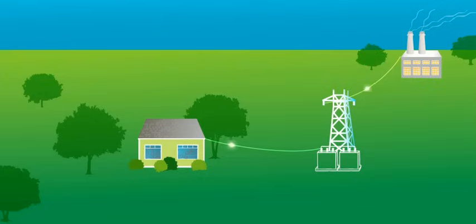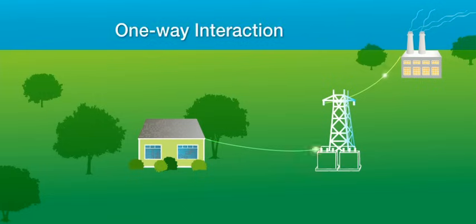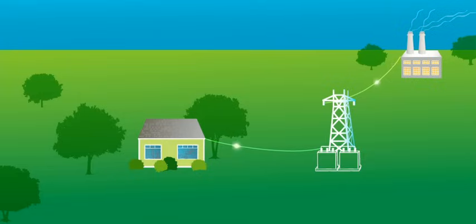The grid was designed for utilities to deliver electricity to consumers' homes and then bill them once a month. This limited one-way interaction makes it difficult for the grid to respond to the ever-changing and rising energy demands of the 21st century.